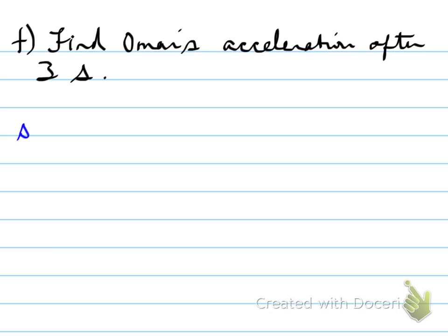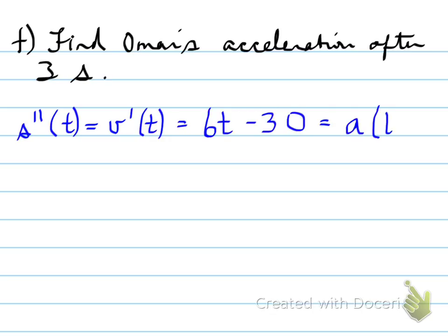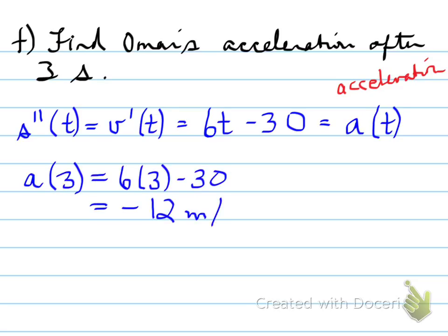Part F: Find Omar's acceleration after 3 seconds. To find acceleration, you take the second derivative of the position function, which is the first derivative of the velocity function. That turns out to be 6t minus 30. Plugging in 3 seconds gives a value of negative 12 meters per second squared.